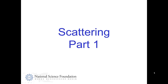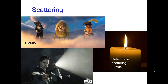Scattering, part one. There are many important visual effects which involve scattering of light. Here are some examples — things like clouds, fog. Some materials have their characteristic look due to subsurface scattering. Here you see a photo of scattering of light as it passes into and out of wax. An even more important example is human flesh.